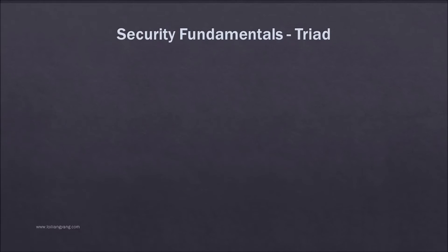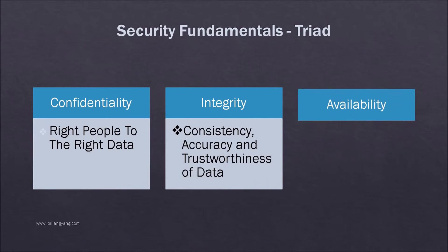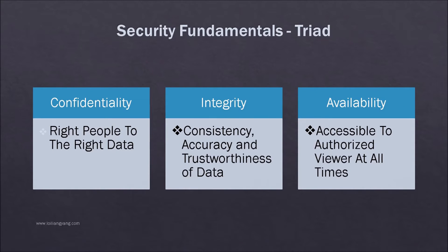One of the fundamentals of computer security is the CIA triad: confidentiality, integrity, and availability. Confidentiality is roughly equivalent to privacy — measures undertaken to prevent sensitive information from reaching the wrong people, while making sure that the right people get that information. Access must be restricted to those authorized to view the data, and data is commonly categorized according to the damage that could be done should it fall into unintended hands.